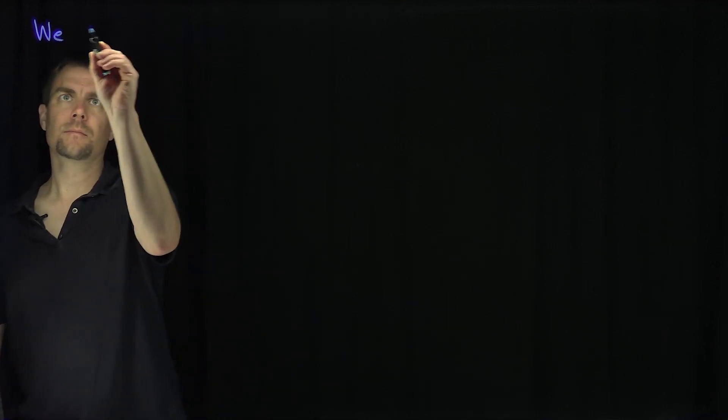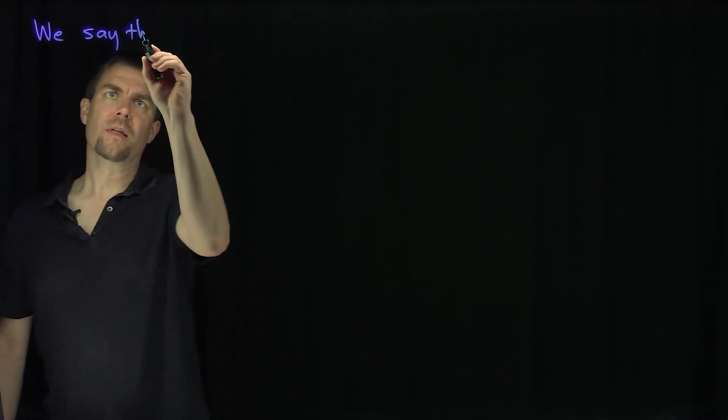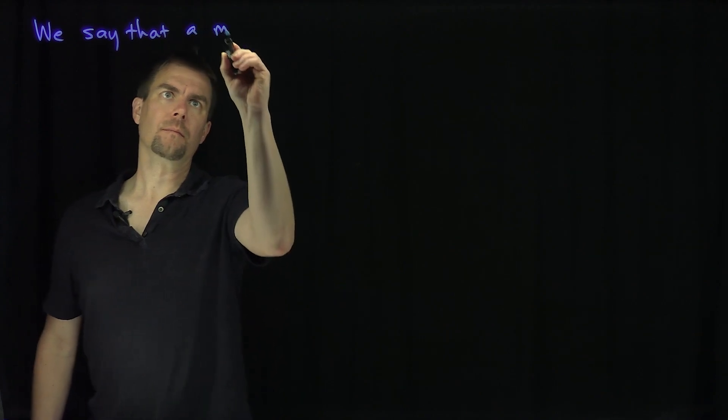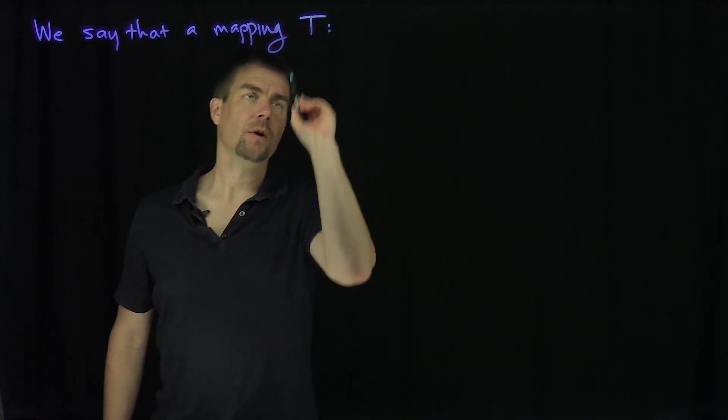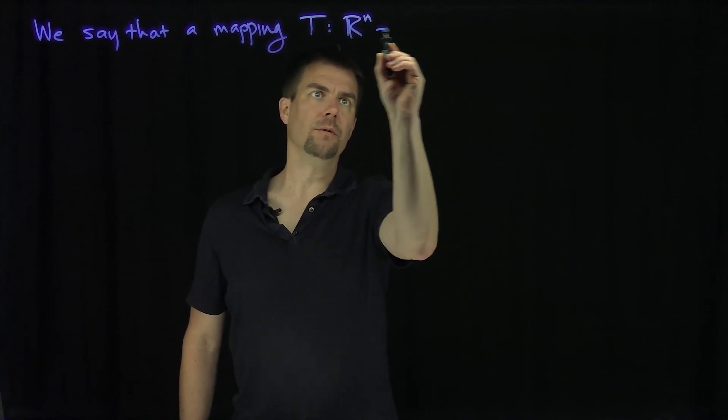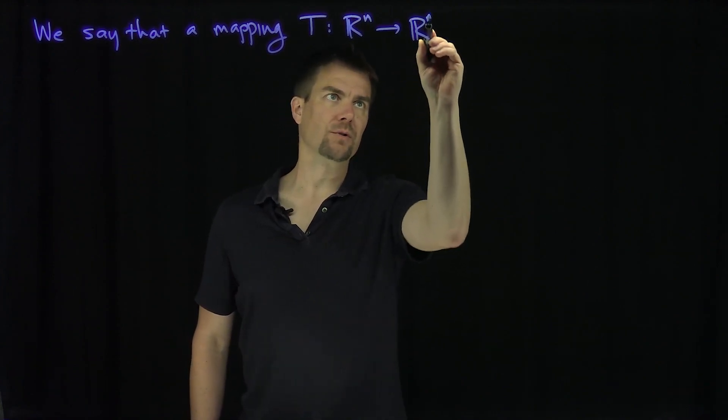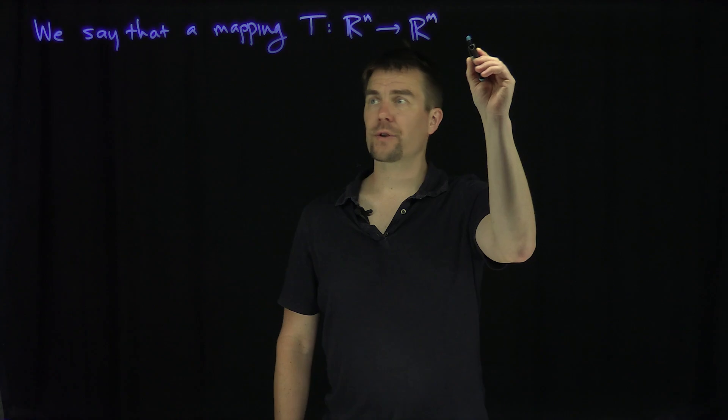We say that a mapping T going from R^n, taking an n-dimensional Euclidean space to n-dimensional Euclidean space, is a linear transformation.